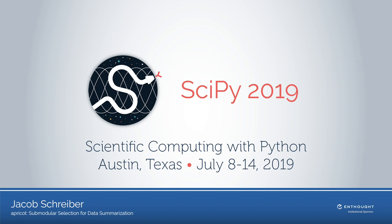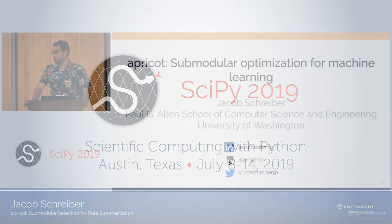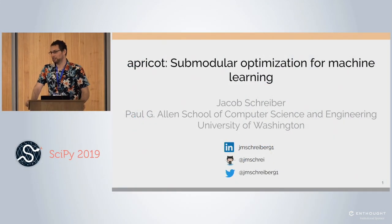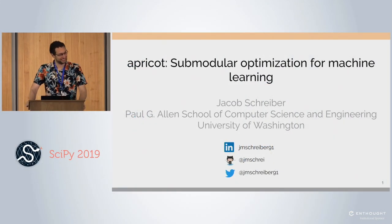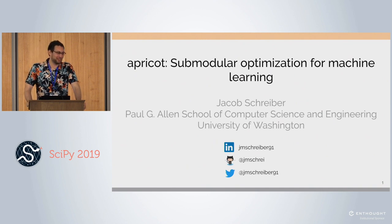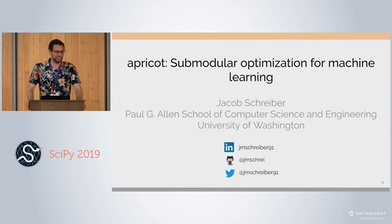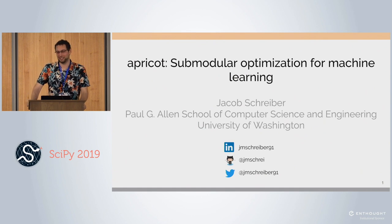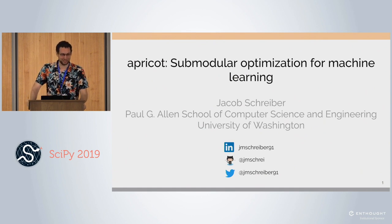My name is Jacob Shriver. I'm a six-year PhD student at the University of Washington. This is my final year there, so I'm really excited about that. And to be clear, it's not because UW is a bad school or anything — it's just six years is a long time to spend at any particular academic institution.